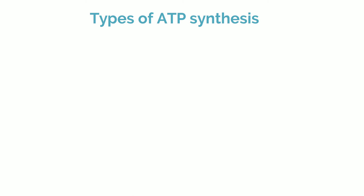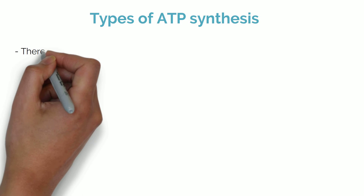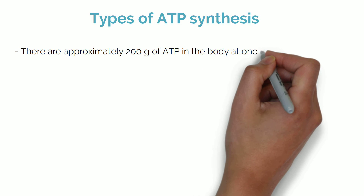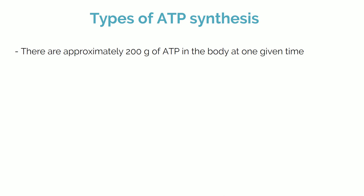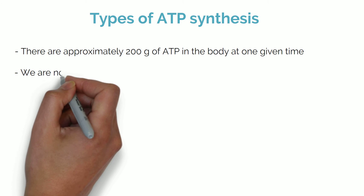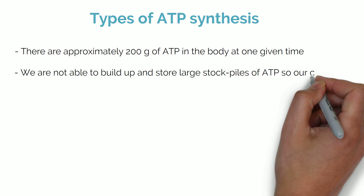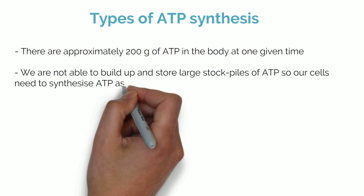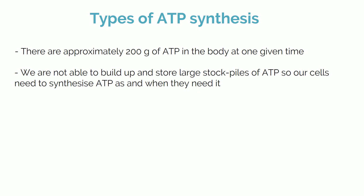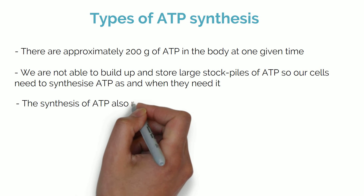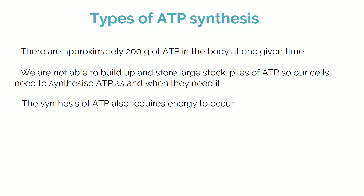There are two types of ATP synthesis. There is approximately 200 grams of ATP in the body at a given time. We are not able to build up and store large stockpiles of ATP, so our cells need to synthesize ATP as and when they need it. The synthesis of ATP also requires energy to occur, so ATP synthesis requires ATP.